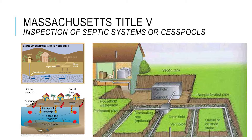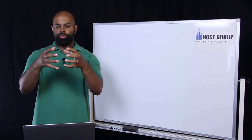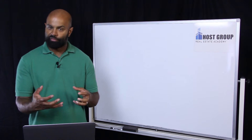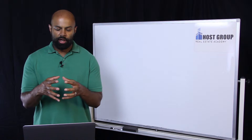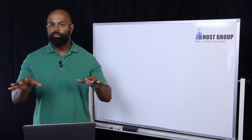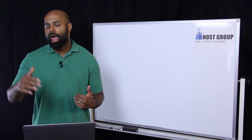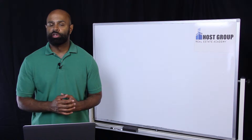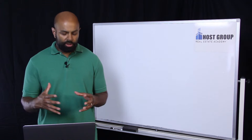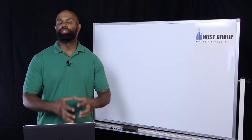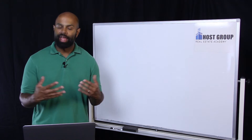That pipe is non-perforated, so the effluent goes into the distribution box — some people call it a D-box. From the D-box, the effluent gets distributed throughout the property into a series of perforated pipes, which we call the drain field. Natural bacteria is introduced to the effluent and breaks down the dangerous substances naturally. The water then percolates back into the ground and gets reintroduced into the groundwater table and recycled. Septic systems are very efficient on-site waste disposal systems.